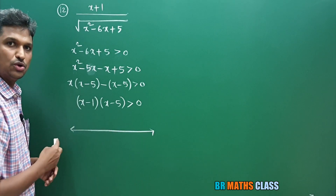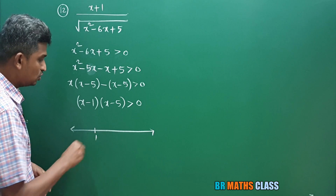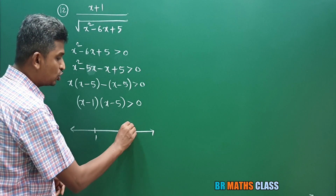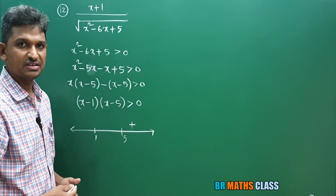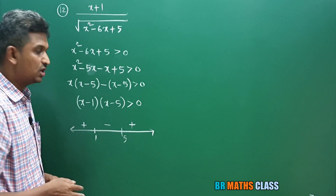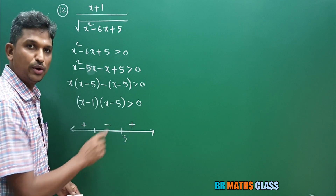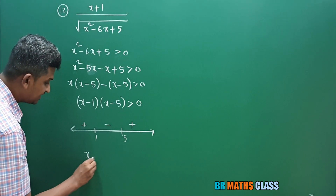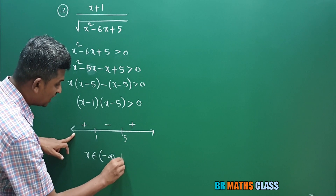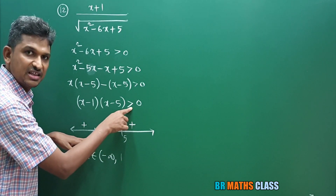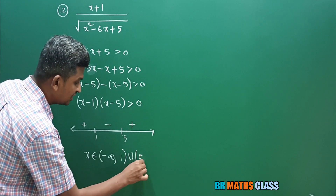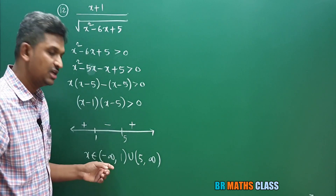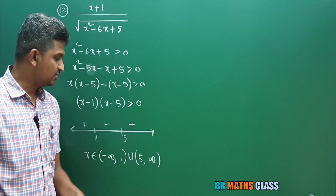Equate (x minus 1) to zero: x equals 1. Equate (x minus 5) to zero: x equals 5. On the number line mark 1 and 5. Rightmost corner plus, alternate: minus, plus. I want strictly greater than zero — positive sign. Positive intervals are minus infinity to 1 and 5 to infinity. Since strictly greater than, use open intervals. Domain is open interval minus infinity to 1, union open interval 5 to infinity.